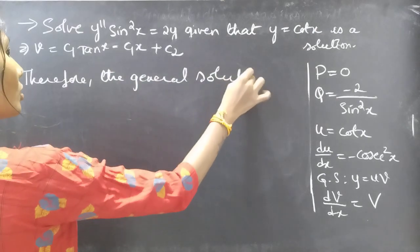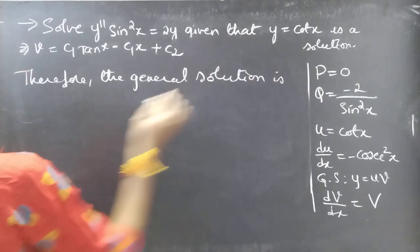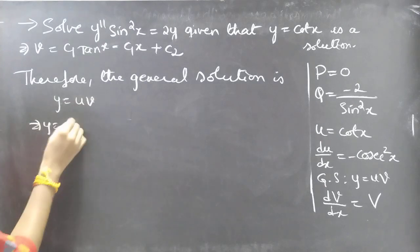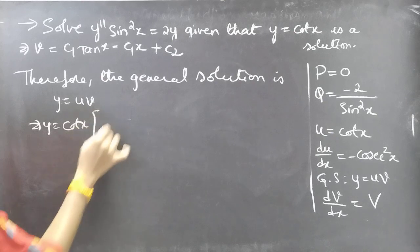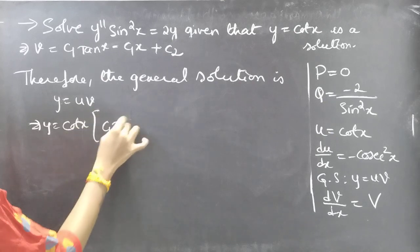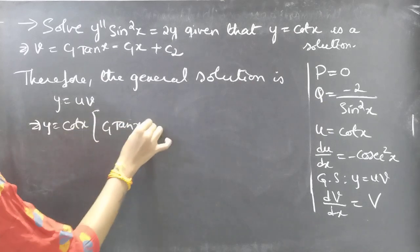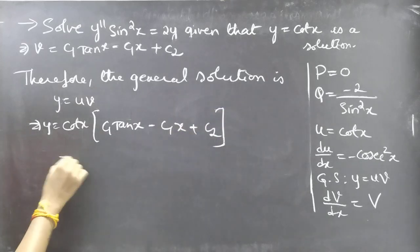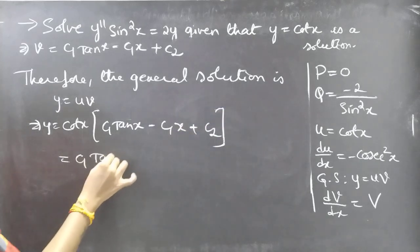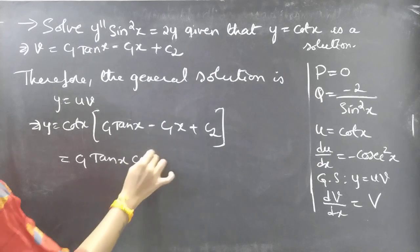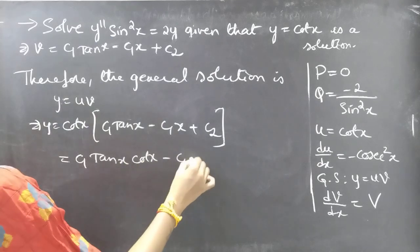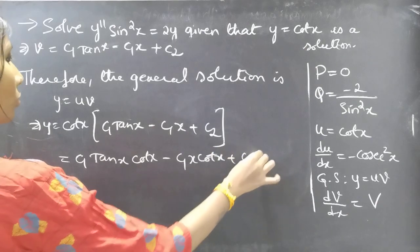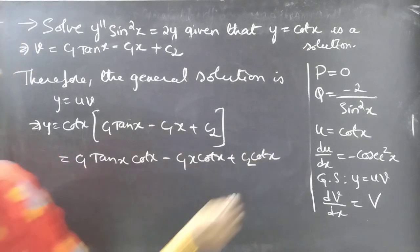Therefore the general solution is y = u·v, which gives y = cot x · (C₁ tan x − C₁ x + C₂). Expanding: y = C₁ tan x · cot x − C₁ x · cot x + C₂ · cot x.